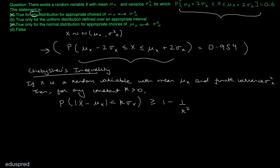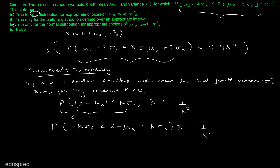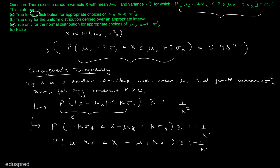Let's simplify the expression. On the left-hand side, using the modulus, I can write: the probability that X minus μ lies between minus kσ and kσ is greater than or equal to 1 minus 1/k². Now adding μ to all terms, I get: the probability that μ minus kσ is less than X less than μ plus kσ is greater than or equal to 1 minus 1/k².